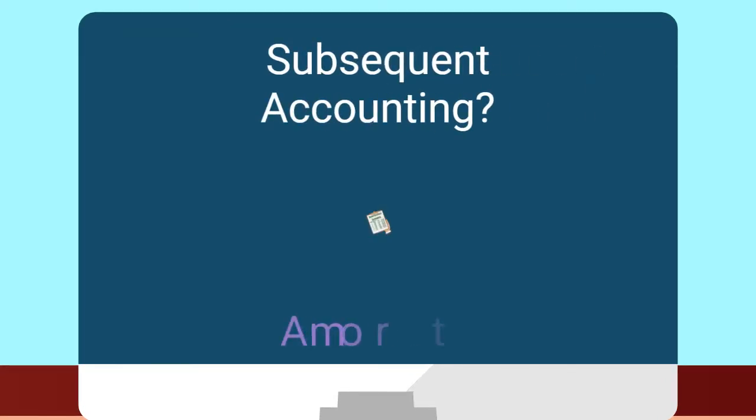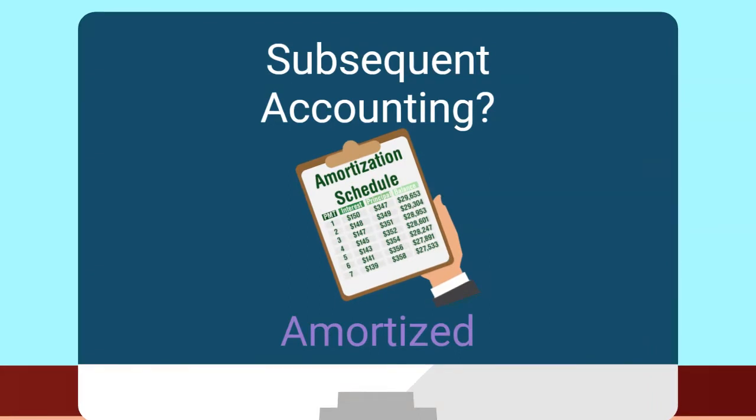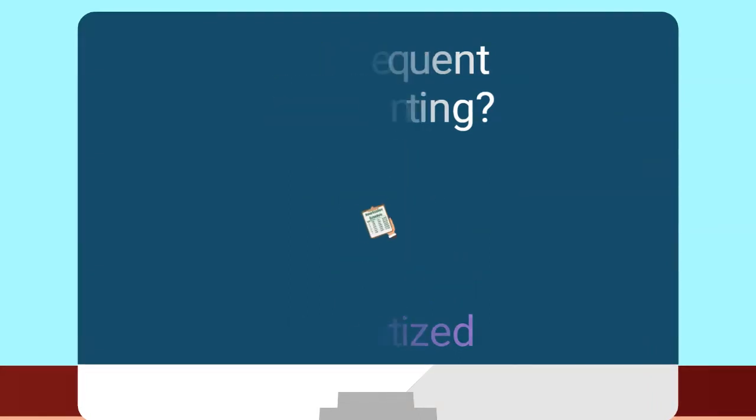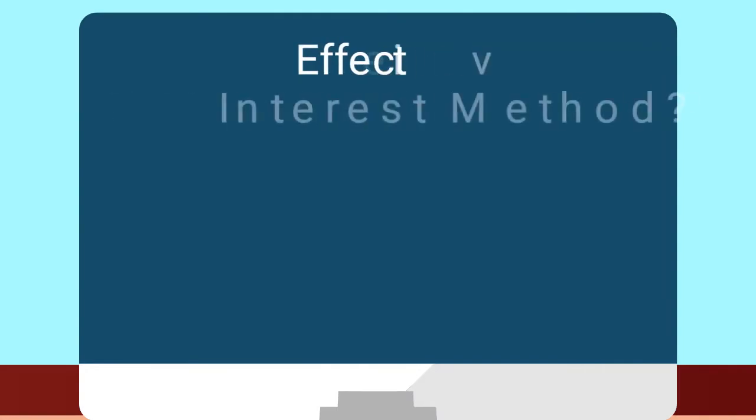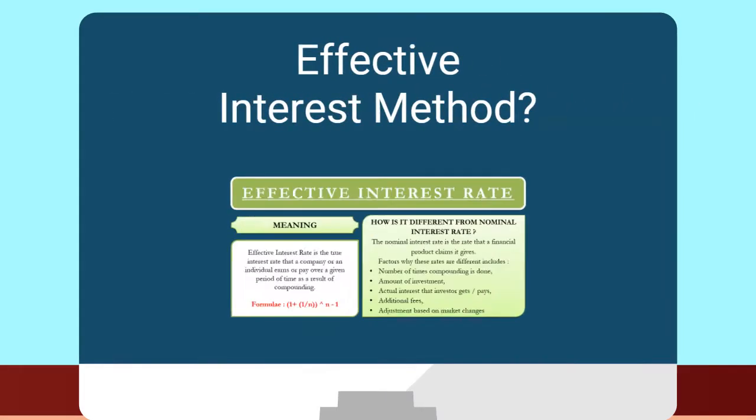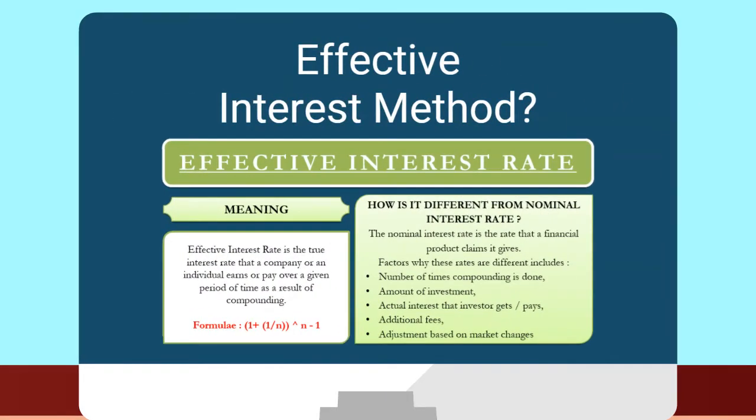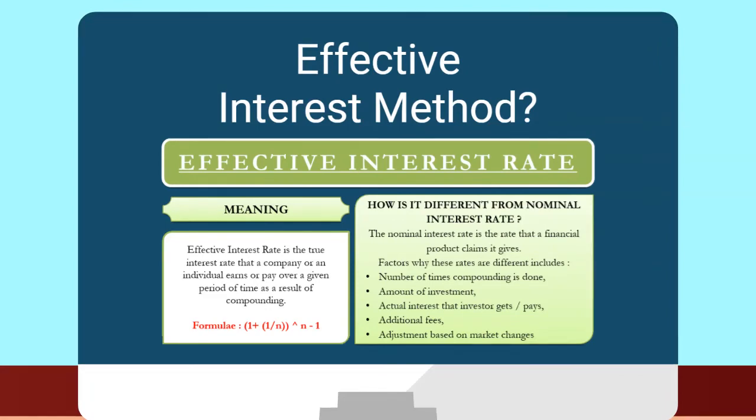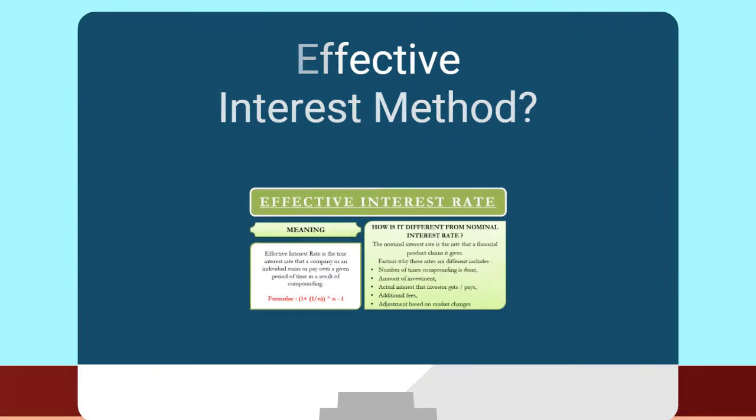Great question. These discounts, premiums, and debt issuance costs all get amortized over the life of the debt using the effective interest method. What exactly is the effective interest method? The effective interest method is an accounting amortization technique that correlates interest expense with accounting book value of the bond or debt. Over time, as the debt balance increases, the amortization will also increase. I think I'm going to need to see an example.